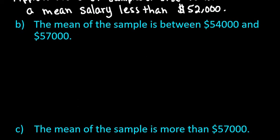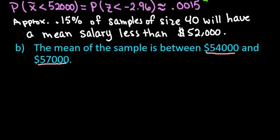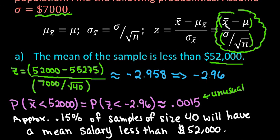This next one is more intense because you have to do multiple things to find the answer. If you are using tables, you must first find the z-score for $54,000, then find the z-score for $57,000, and then subtract the table values. To find the area in between, you do the area of the larger z-score minus the area of the smaller z-score. We're still using the formula x-bar minus mu divided by sigma over the square root of n.